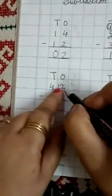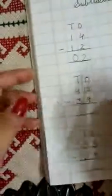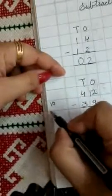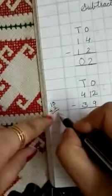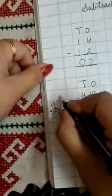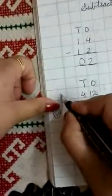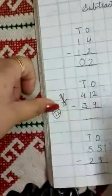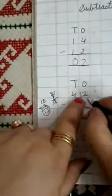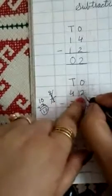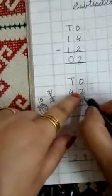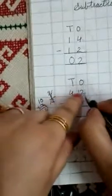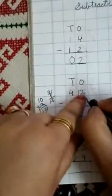If you give 10 numbers, then 10 plus 2 is 12. So the ones place becomes 12. And because the tens digit 4 gave 1 number, it is now cut to 3. So we have 3 in the tens place and 12 in the ones place.